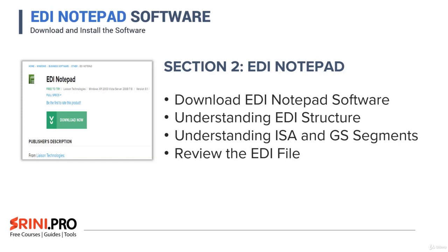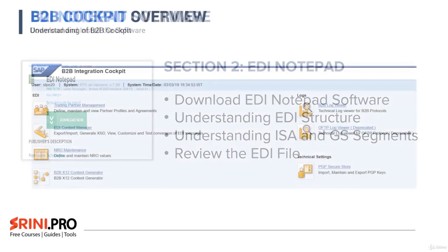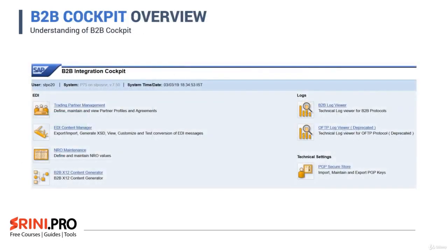We'll review the EDI file and then add in our own ISA and GS IDs into the file. In the next section, we will look at the B2B cockpit overview, where we will work with the EDI content manager to convert ANSI X12 messages to XML. We'll also do some configuration in the NRO maintenance.